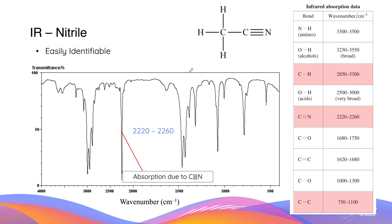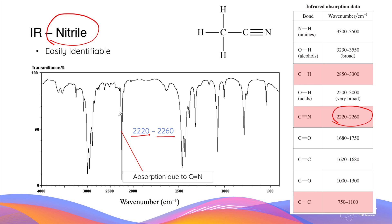The last covalent bond that can be easily identified using infrared spectroscopy is the nitrile functional group. While this is not taught in Module 7 of organic chemistry in the syllabus, it is included in the NESA data sheets. The carbon–nitrogen triple bond absorbs in a very characteristic wave number range between 2220 and 2260. This is a characteristic range because no other covalent bond absorbs near this wave number, so when you see an absorption signal in this range, it directly points you towards a nitrile compound. This concludes the video on infrared spectroscopy.